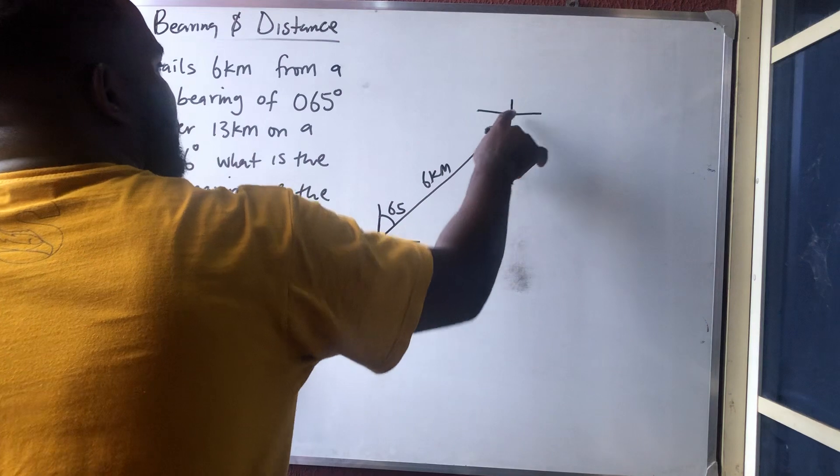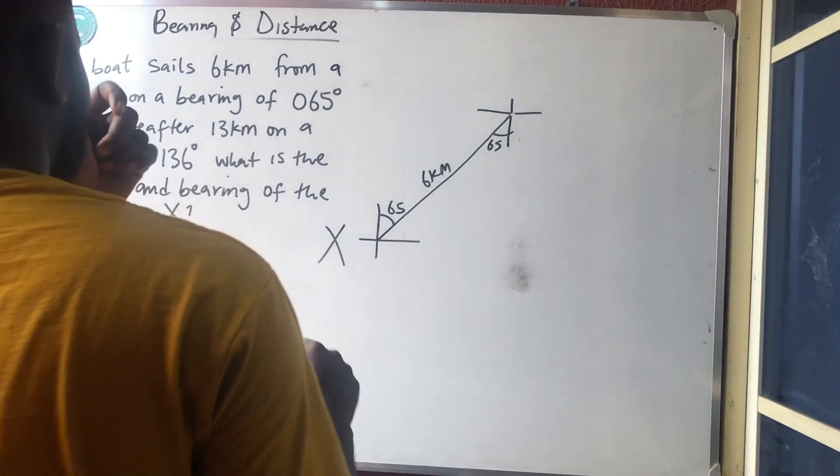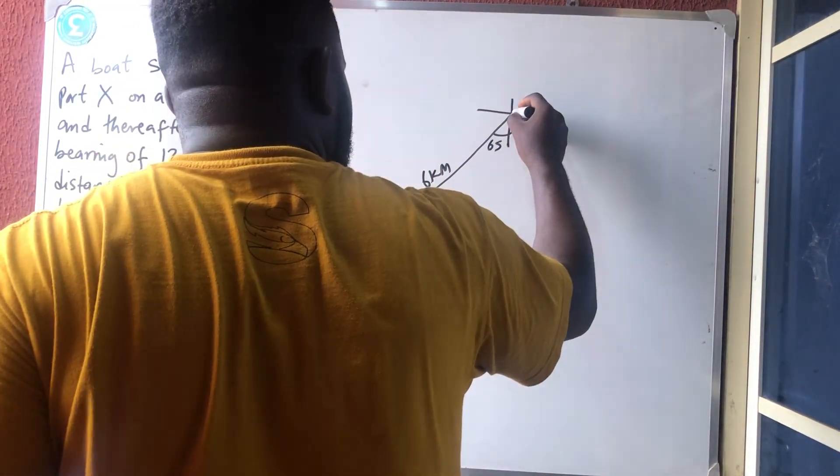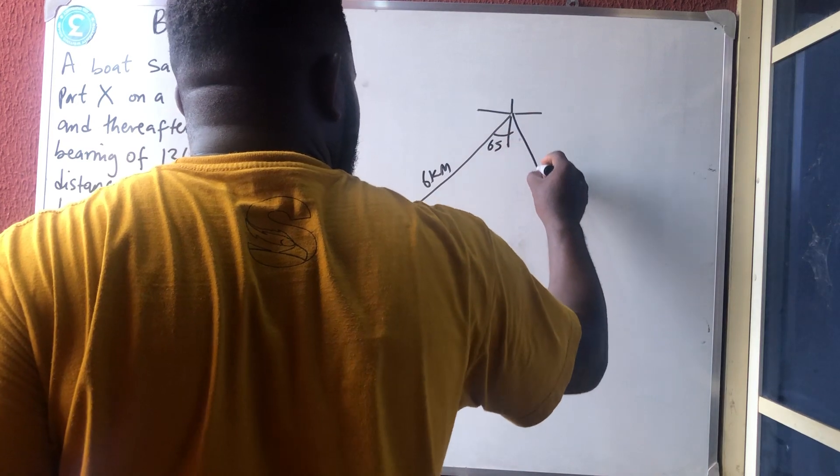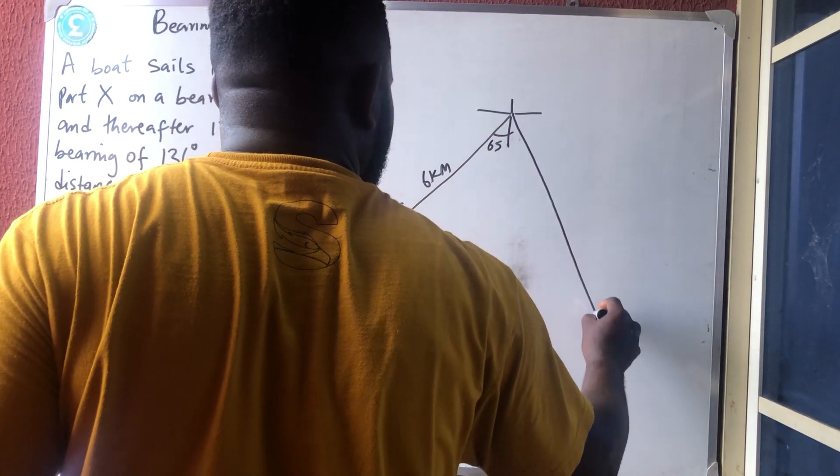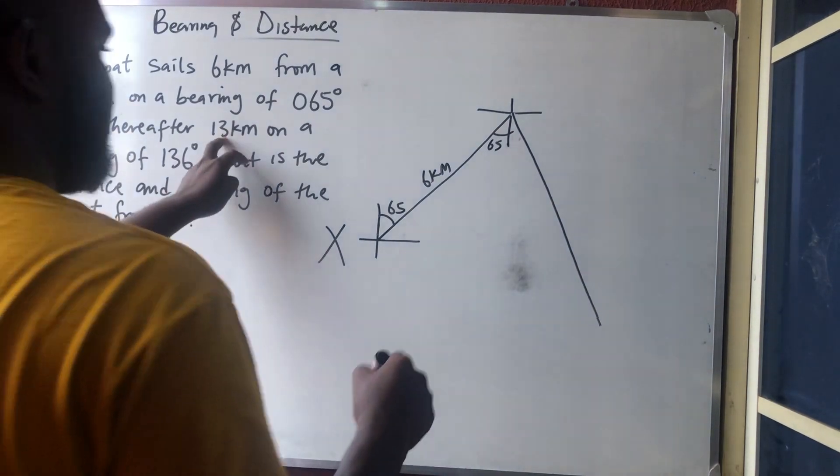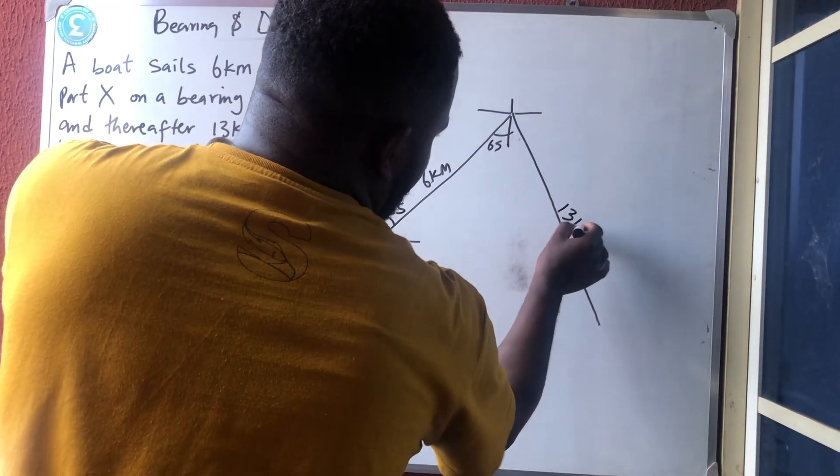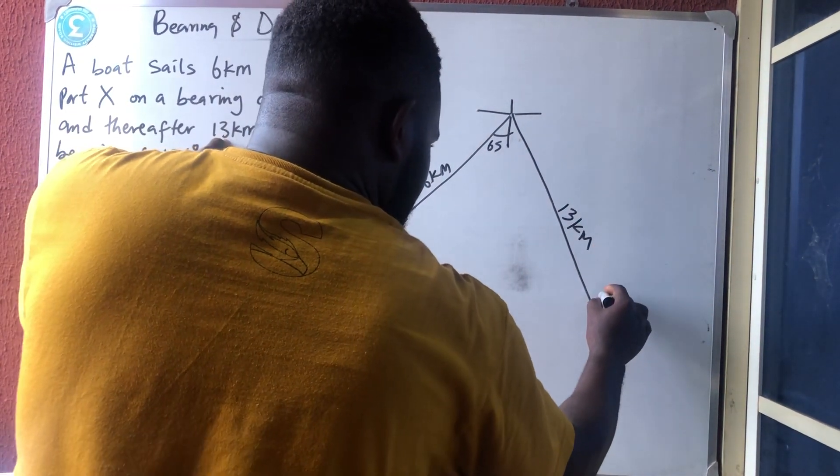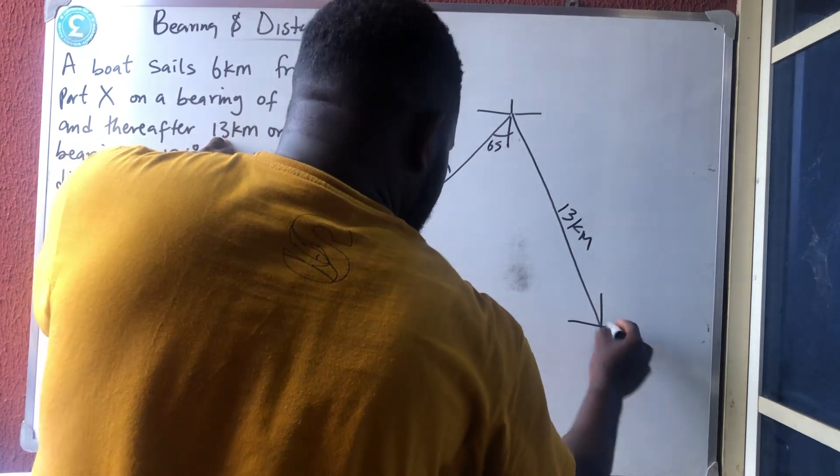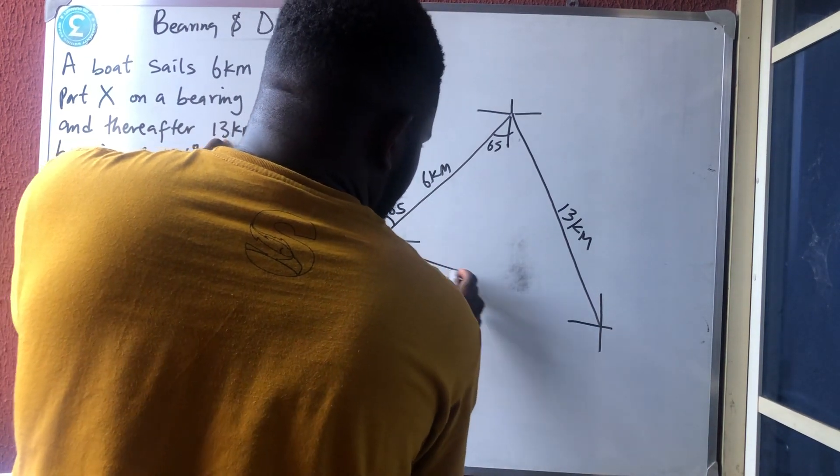And then 136°. 136° is the second quadrant, which is this side. I made this one longer because this is 13 kilometers, so it should be longer than six kilometers. So you cut like this and cut like this, and then join this one from here to here.